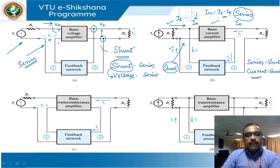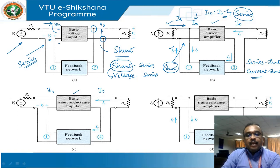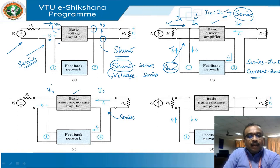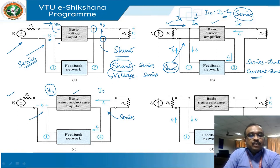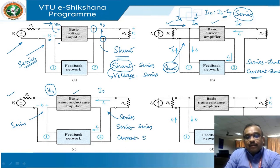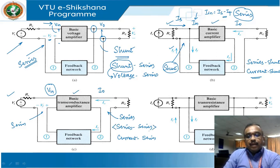Block diagram C uses a trans-conductance amplifier with current at the output and voltage at the input. The output current is sampled in series, and we have a voltage source fed back to the input in series for negative feedback. So this is a series-series amplifier, also called a current-series feedback amplifier, or trans-conductance amplifier with series-series feedback.